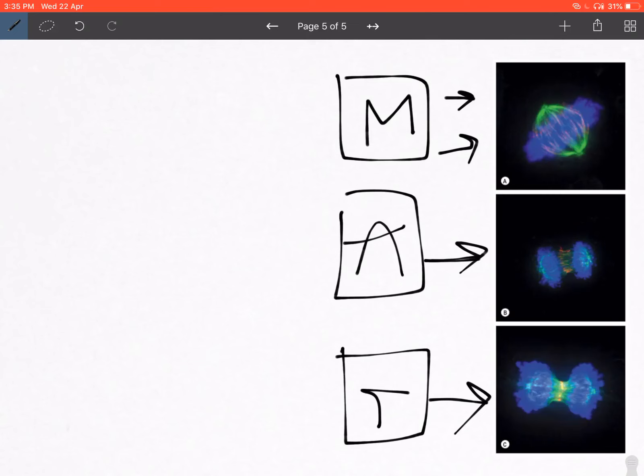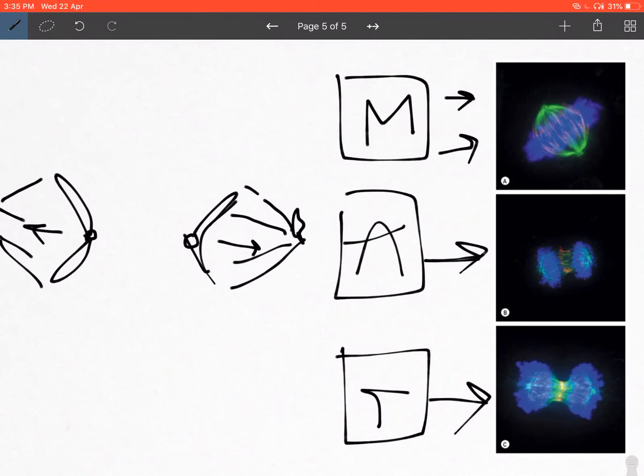Remember: prophase—coiling, supercoiling, and condensation, centrioles start migrating toward the poles. Prometaphase—the centrioles have reached the poles and are now extruding out the microtubules. Metaphase—the fully condensed chromosome has arranged itself along the equator and the mitotic spindle is formed. Anaphase—because of centromere splitting, the sister chromatids are now headed toward either side, pulled by the mitotic spindle. And finally, telophase, where the nuclear membrane reappears and the cytoplasm starts dividing equally in most cases, thus forming two daughter cells.